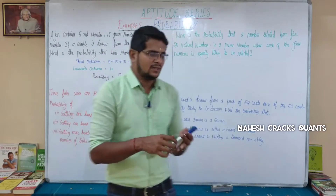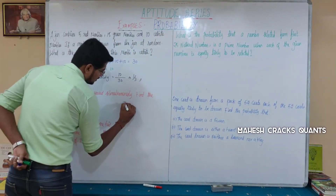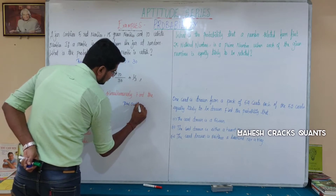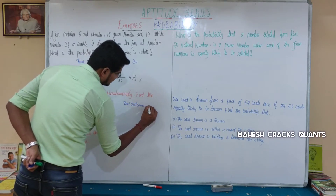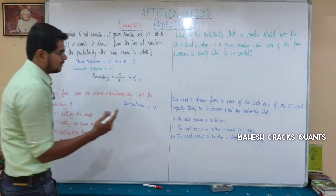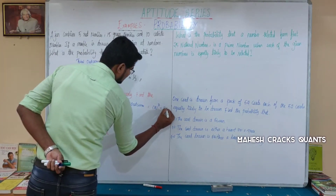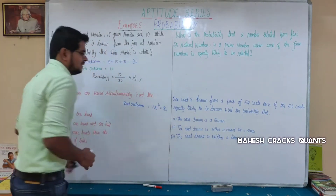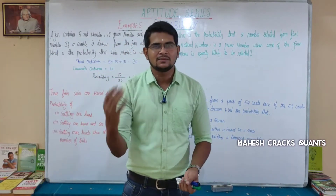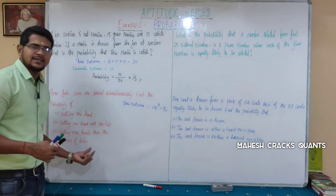Three coins are tossed. Total outcome is equal to 2 raised to the power of the number of coins. So 2 power 3 equals 8. Total outcome is equal to 8 for all sub-questions.